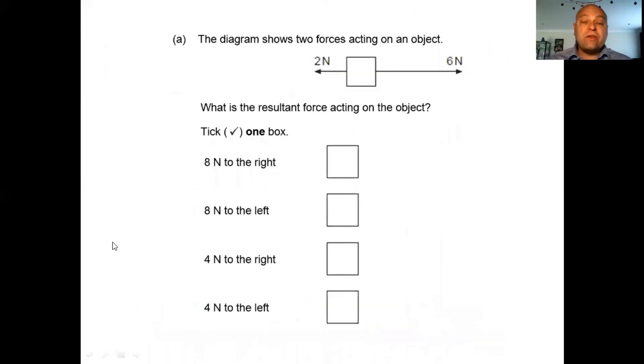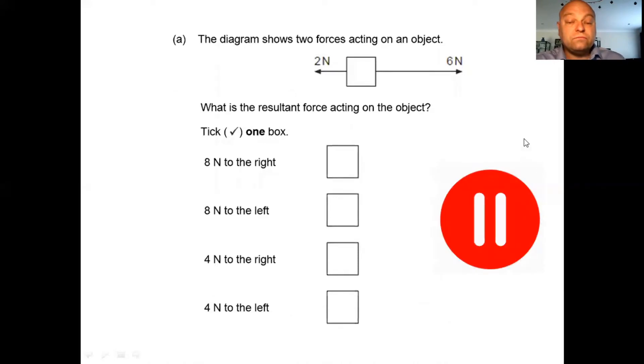Let's have a look at the sort of thing you might get in the exam question. This is a little extract from a GCSE exam question a few years back. Pause the video, have a think. What do you think the correct answer is? Well, quite easy. Six going to the right, take away two going to the left. Six take away two is four. So it's four Newtons to the right. Well done if you got that correct.